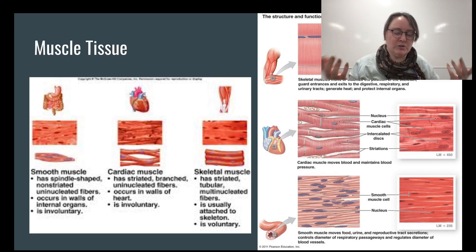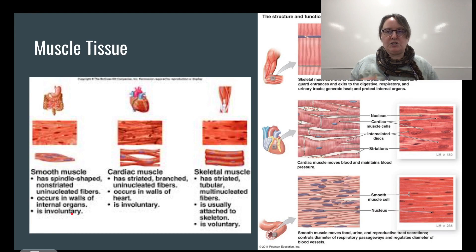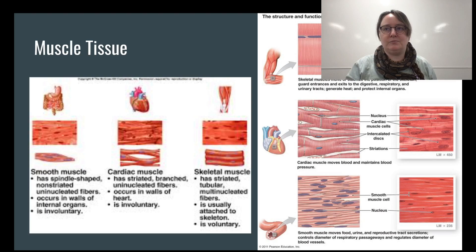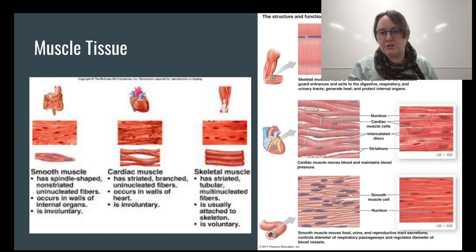Smooth muscle is involuntary and produces the smooth movements like when you swallow and peristalsis takes over. Cardiac muscle is striated, branched, uninucleated, occurs in the walls of the heart, and is involuntary. Skeletal muscle is striated, tubular — running in long tubes — multinucleated, attached to the skeleton, and is voluntary, which is how we control our limbs.